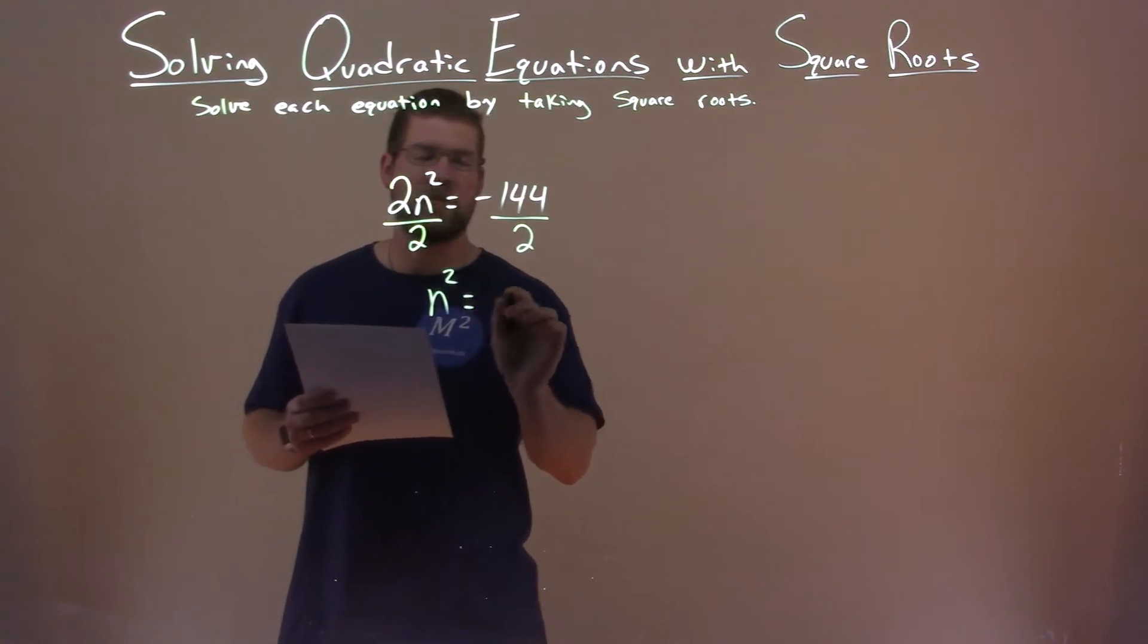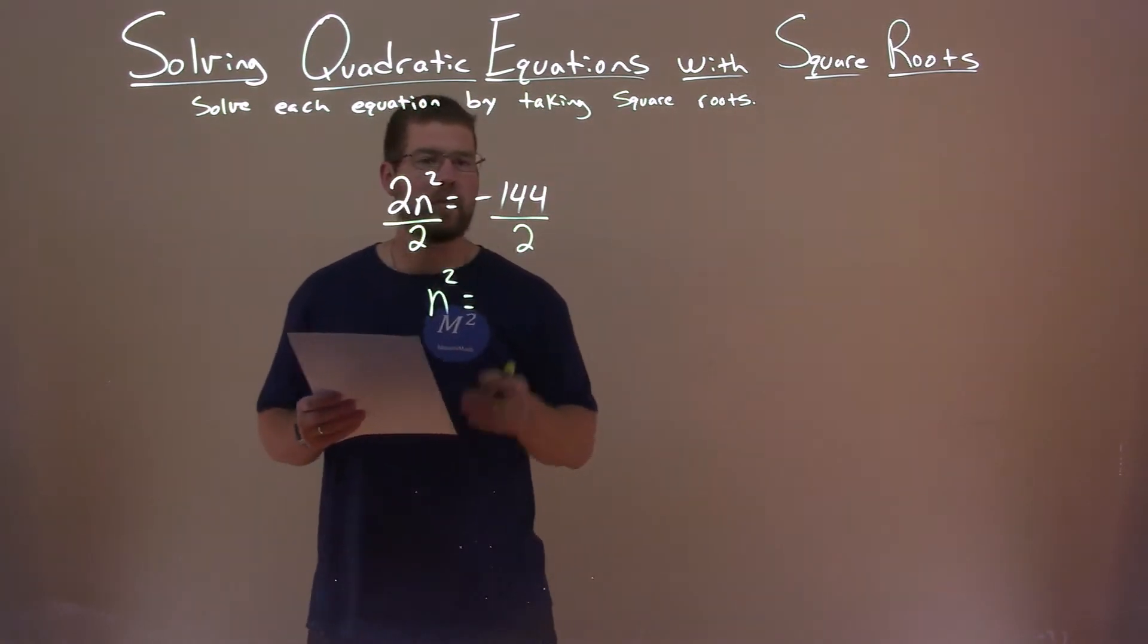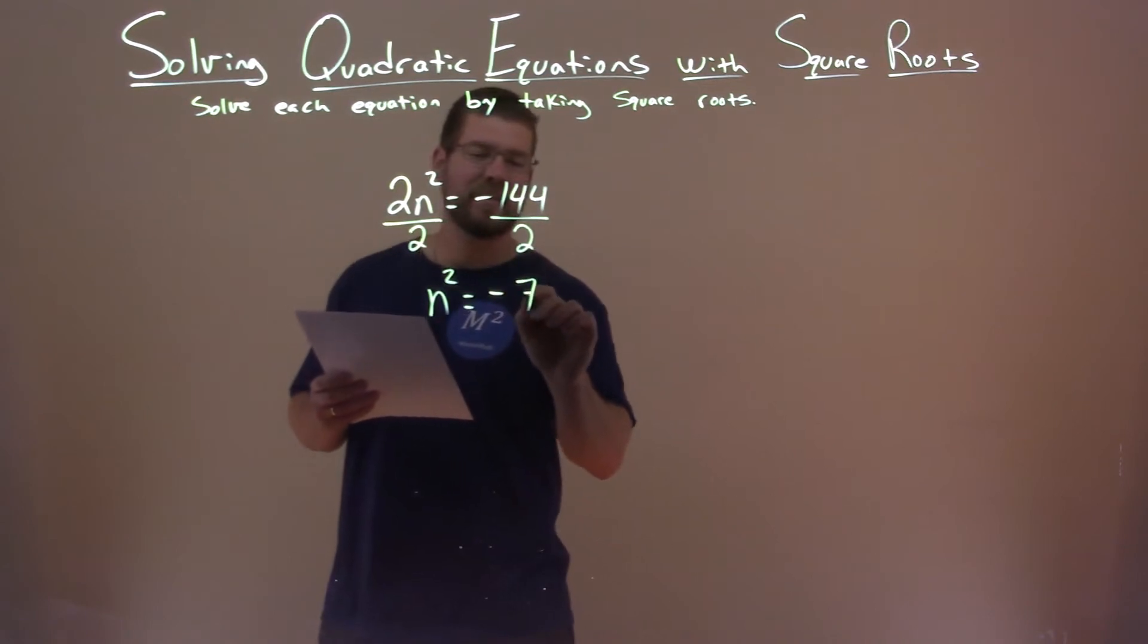That gives me n squared here by itself and negative 144 divided by 2 is negative 72.